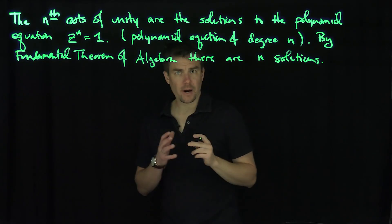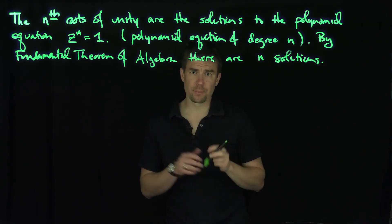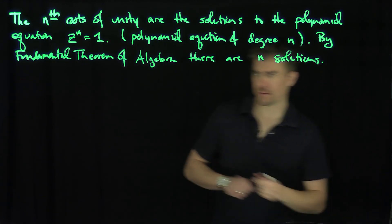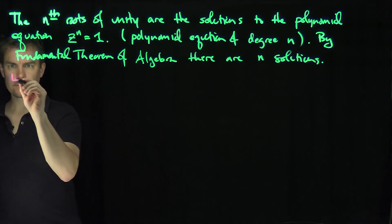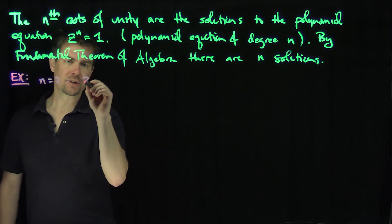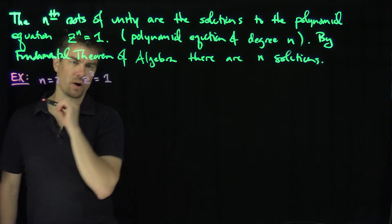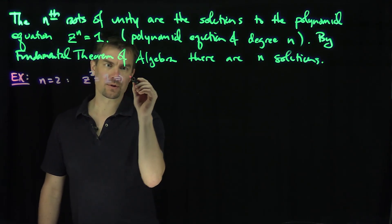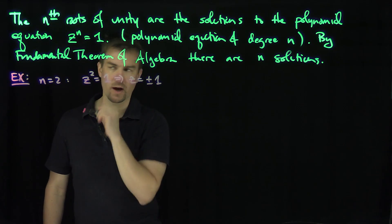Let's start by doing a couple of simple examples, and then we'll find the general solution. So here's the first simple example. When n is equal to 2, you just get z squared is equal to 1. We know the solutions to this are just z equals plus or minus 1.